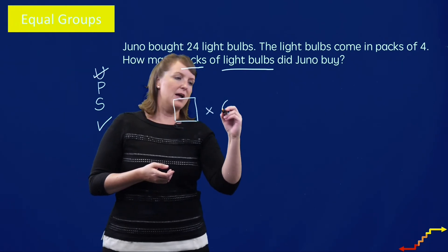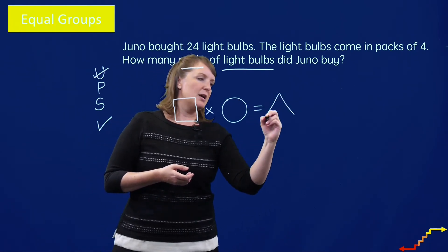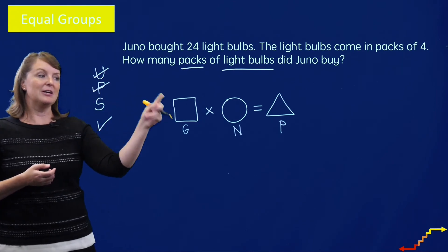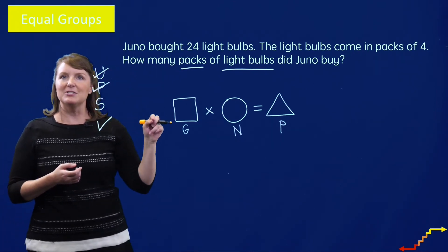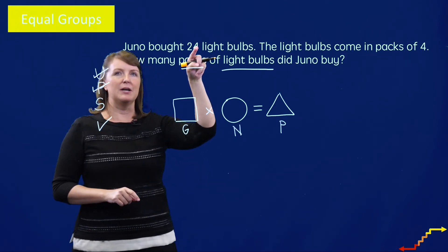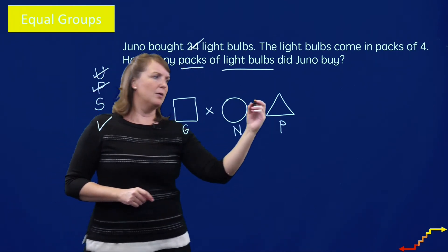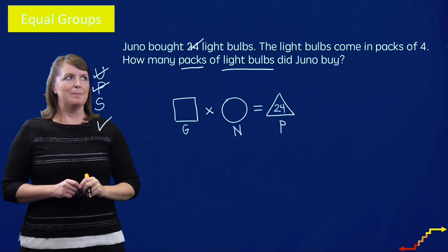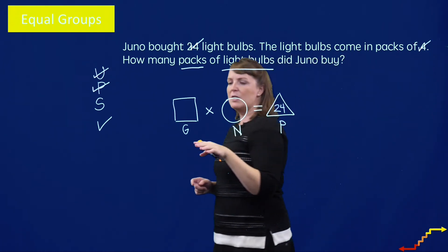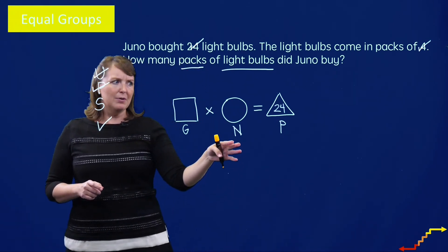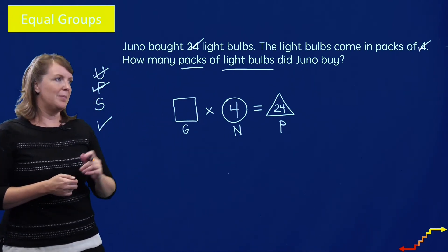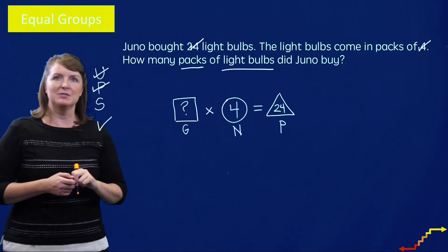I'll set up a graphic organizer: square times circle equals triangle, or groups times the number in each group equals the product. Juno bought 24 light bulbs — does 24 tell me about the groups, number in each group, or the product? 24 tells me how many she has in all, so that's the product — I write it in the triangle. The light bulbs come in packs of four — four tells me how many are in each group, so that's the N. Our job is to figure out how many packs, or the number of groups.